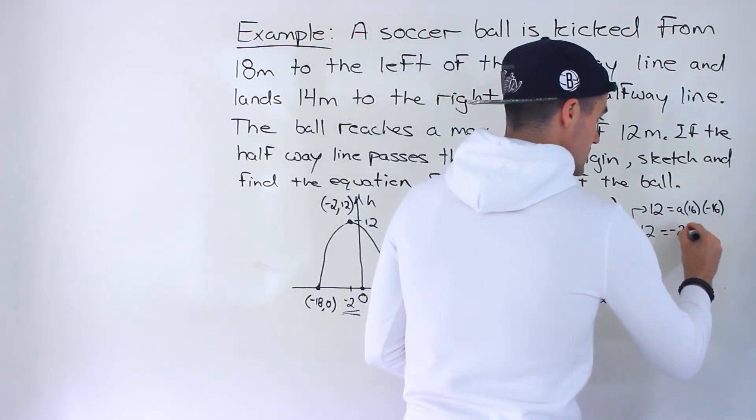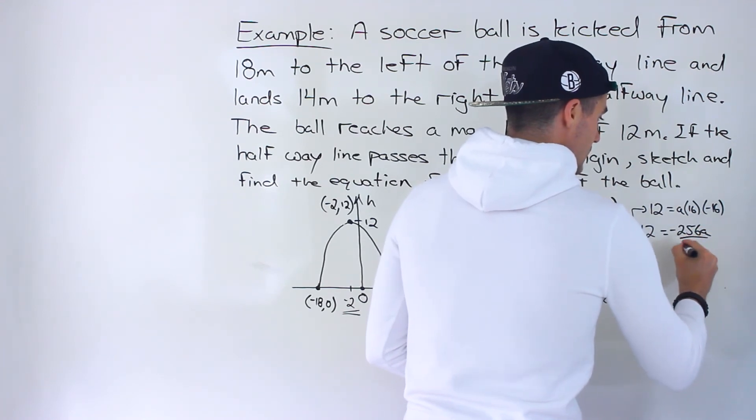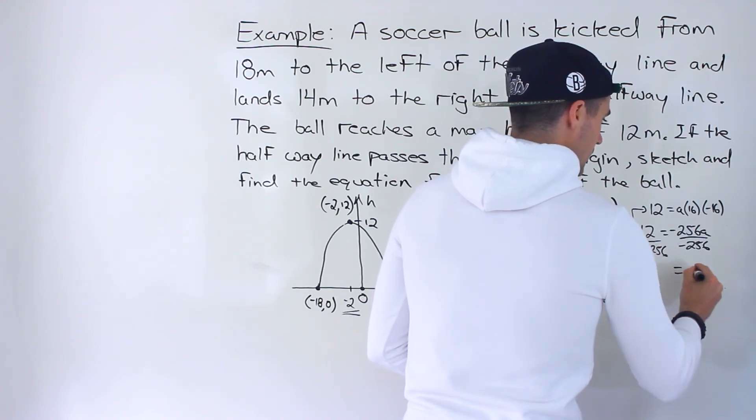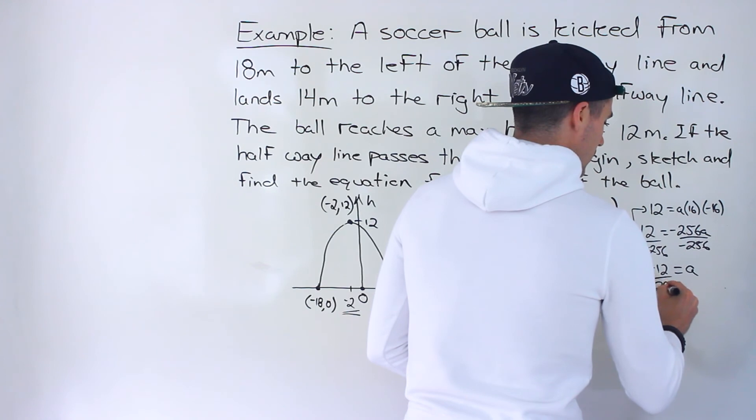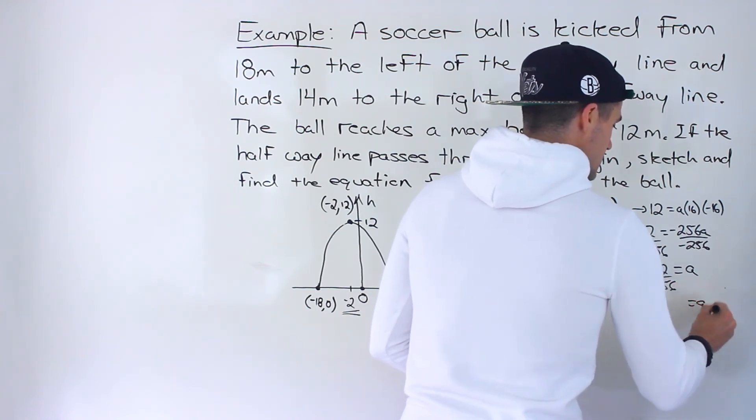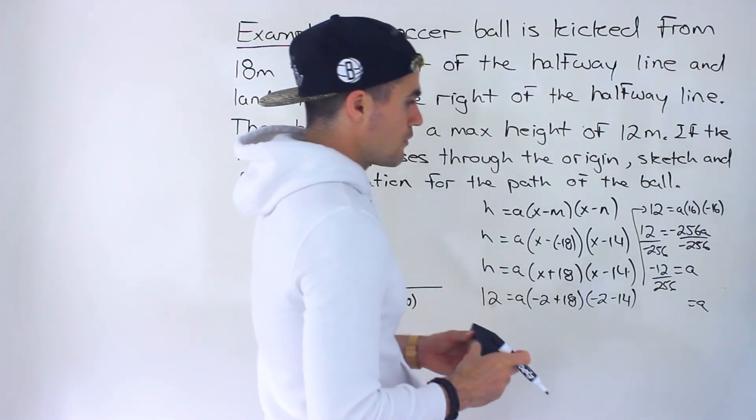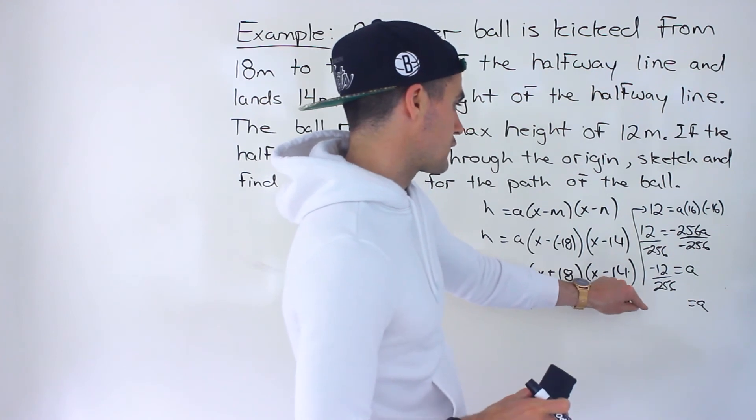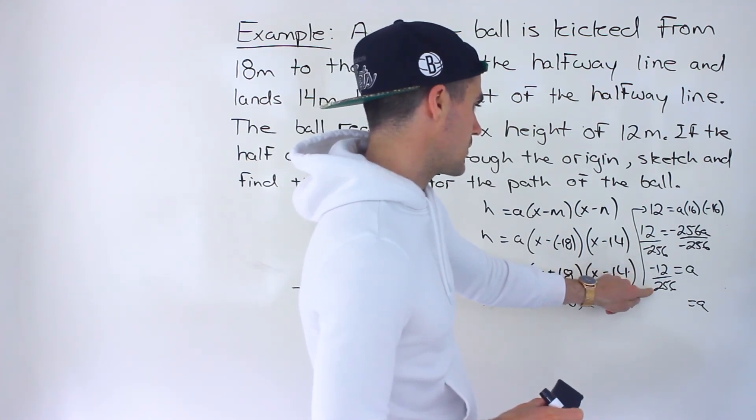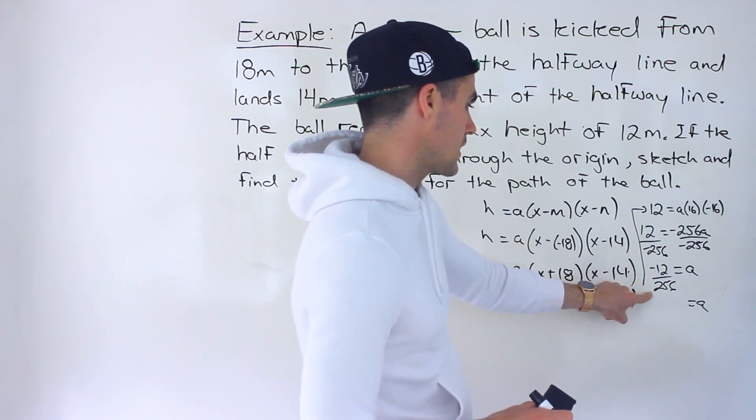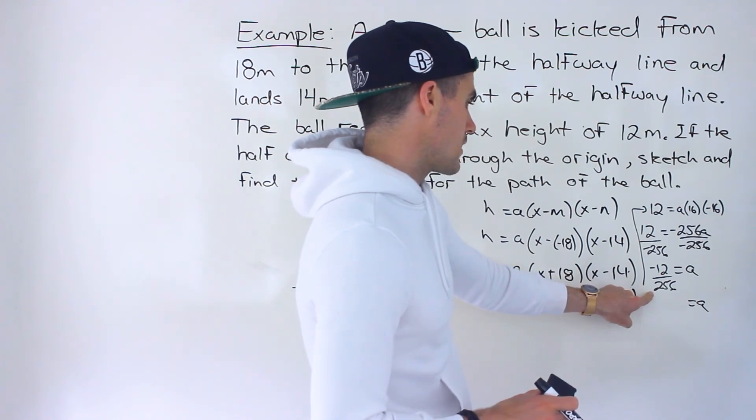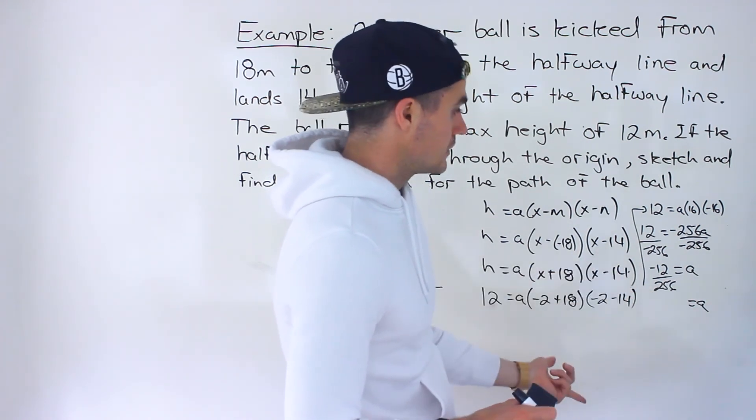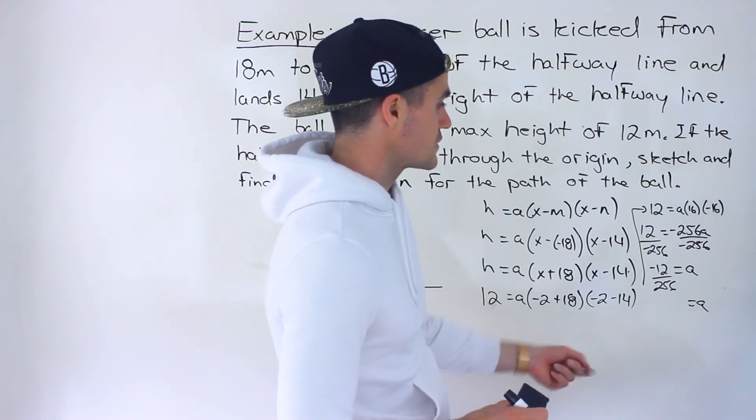Then we'll have 12 equals 16 times negative 16 gives us negative 256a. Divide both sides by negative 256, and we end up with a equaling negative 12 over 256. This actually simplifies further. We could divide by 2, so we'd have 6 over 128, and then we could divide by 2 again to get 3 over 64.